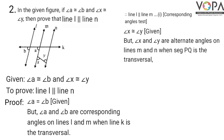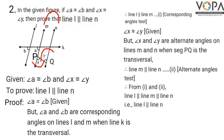Angle X is also given congruent to angle Y. Angle X and angle Y are alternate angles on lines m and n when segment PQ is the transversal. Therefore line m is parallel to line n. Reason: alternate angles test. Number this as statement 2.